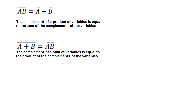I've rewritten out De Morgan's theorems here. The first one is written as a Boolean algebra expression: the complement of a product of variables is equal to the sum of the complements of the variables. The second of De Morgan's theorems is: the complement of a sum of variables is equal to the product of the complements of the variables. When you take A or B and invert it, that's equal to NOT A ANDed with NOT B.